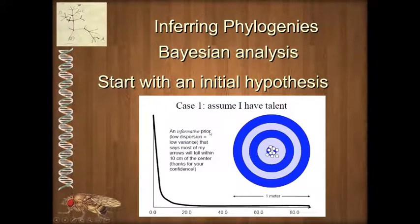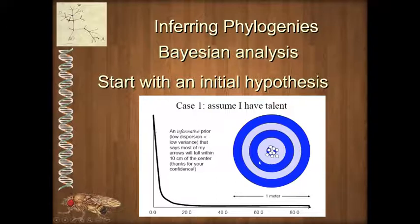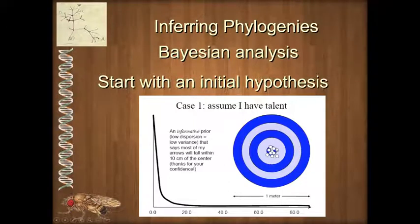If I know it's very likely for you to hit the bullseye, this is very helpful. With an informative prior, I could predict that if you had 11 shots, most of them are going to be pretty close to the bullseye. That's a useful prior probability.